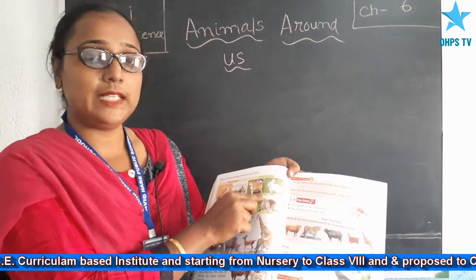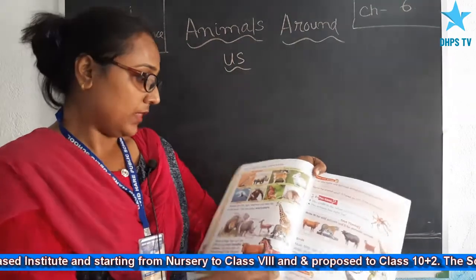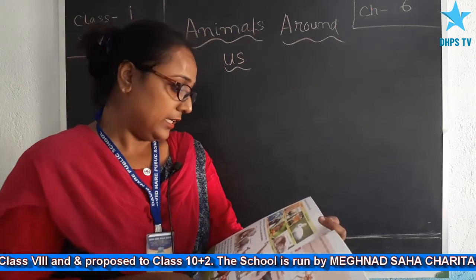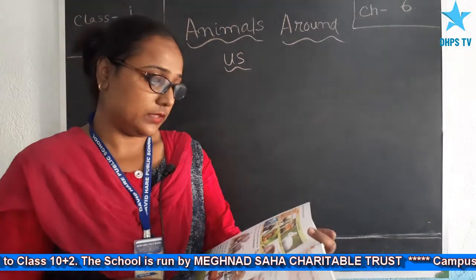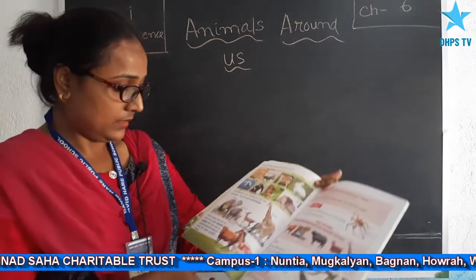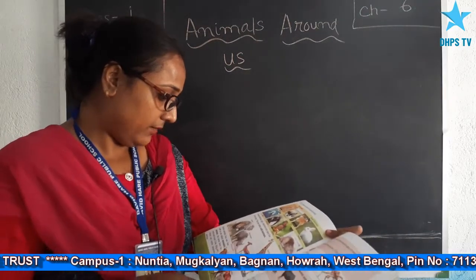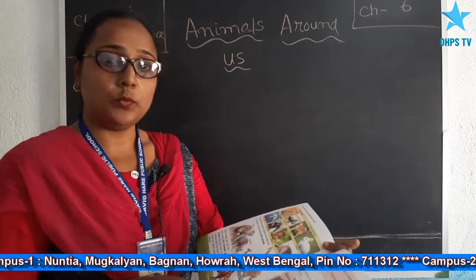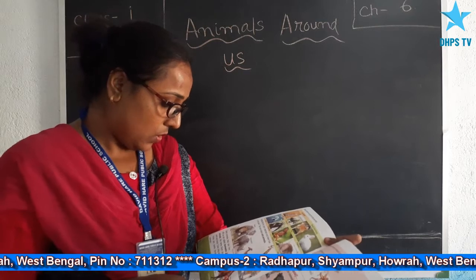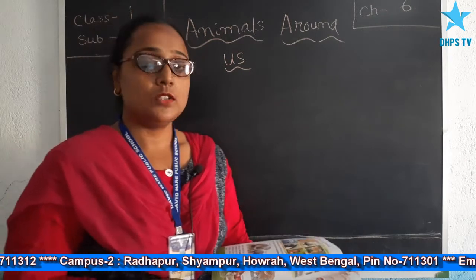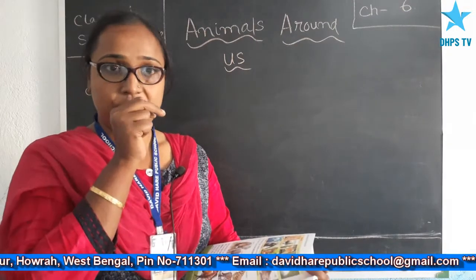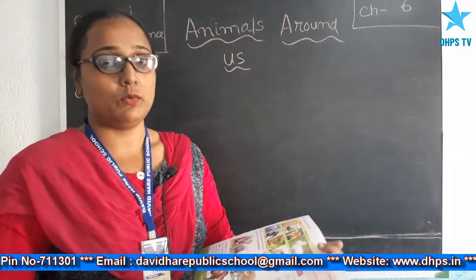These are the animals we mostly see regularly. Animals like lion, tiger, elephant, and deer live in the forest — they are called wild animals. Some animals that live with us are called domestic animals; we tame them for work and food. Cow, dog, and horse are some domestic animals.